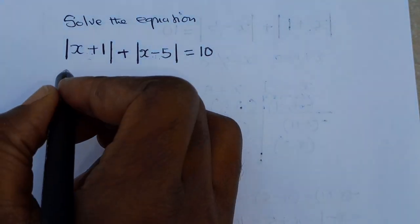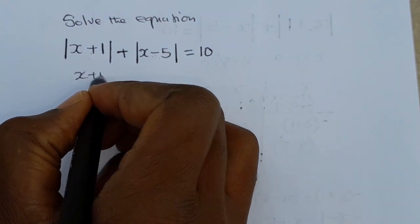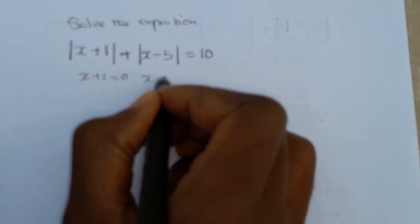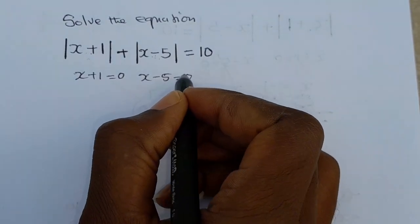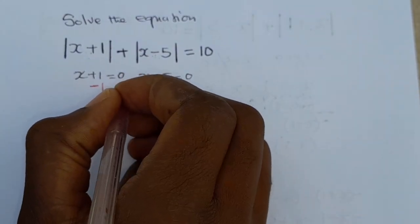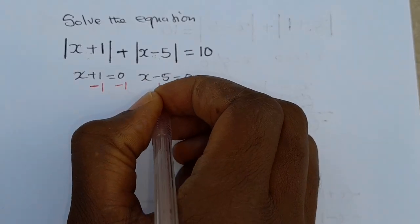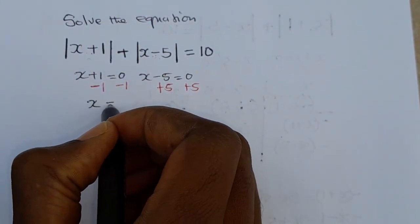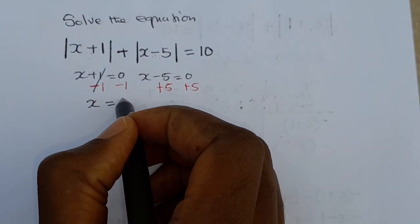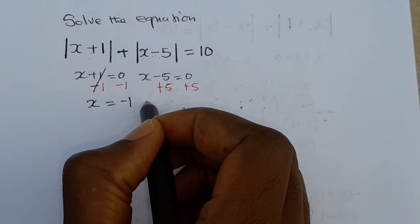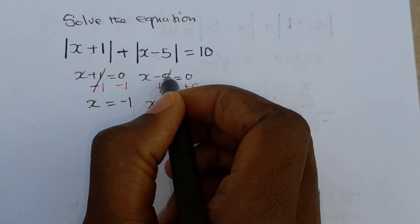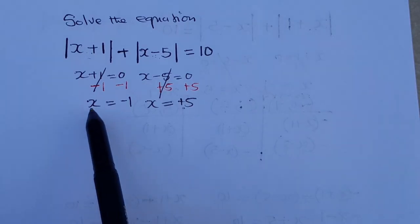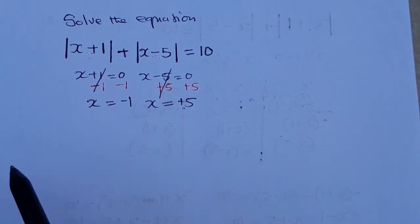So we have x plus 1 equals zero, and also x minus 5 equals zero. Subtract 1 on both sides of the first equation to get x equals negative 1. Add 5 on both sides of the second equation to get x equals positive 5. So we have these two critical values: negative 1 and positive 5.